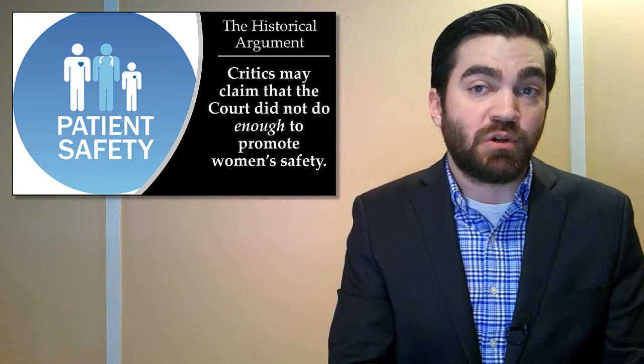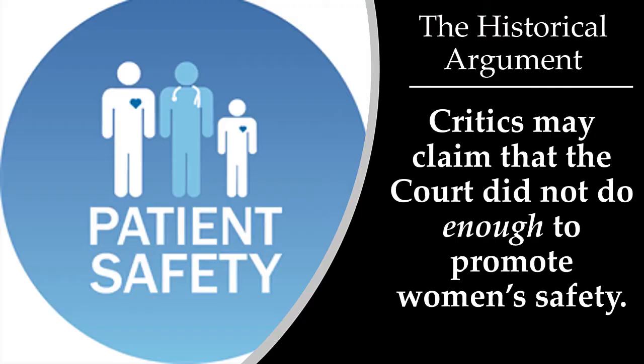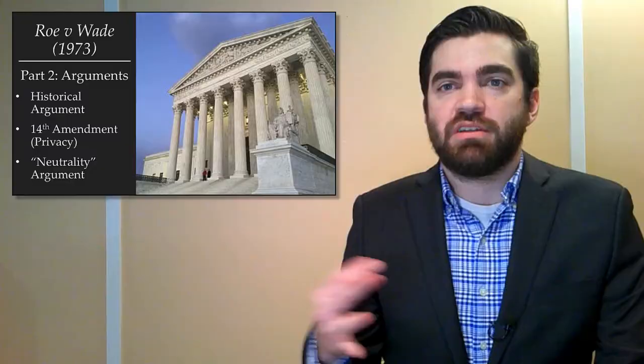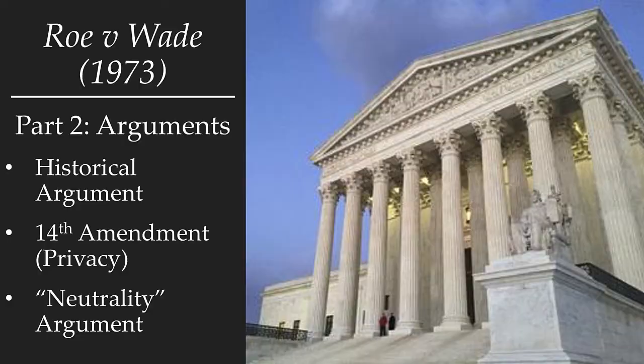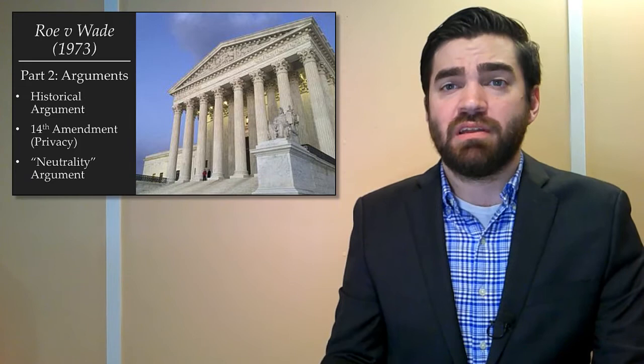So now we've gotten through the historical argument. There are two arguments left: the 14th Amendment argument, which deals with privacy, and the neutrality of law argument. For the 14th Amendment argument, it's relevant to note what the amendment says: all persons born or naturalized in the United States are citizens; no state shall deprive any person of life, liberty, or property without due process of law, nor deny to any person within its jurisdiction the equal protection of the laws.